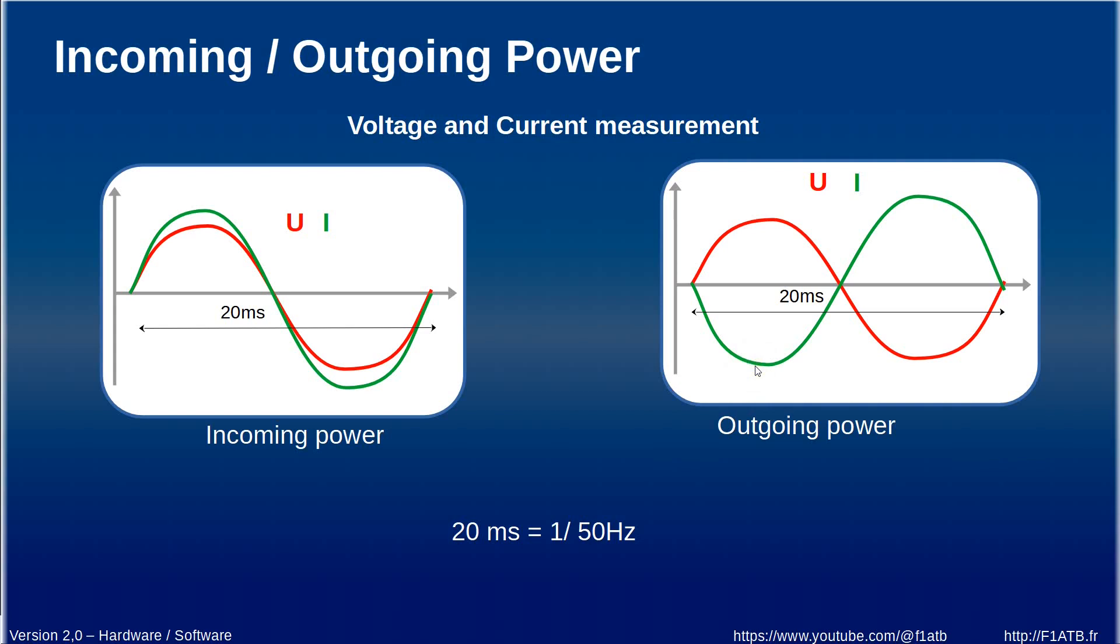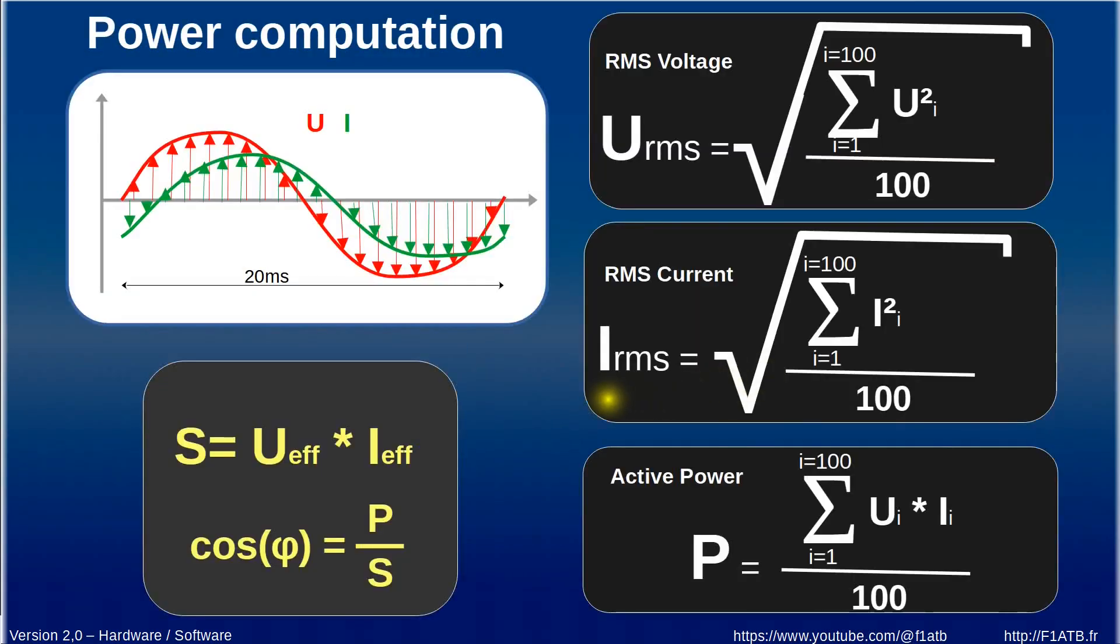So it's a way we have to see if the power exchange with the outside world to the grid is an incoming power or an outgoing power. So what we have to do in our system is to measure accurately the voltage in red here by taking a lot of measurements during the 20 milliseconds period.